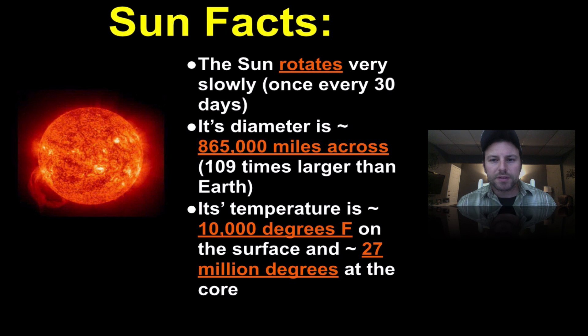A couple of facts we should know about the sun: one, that it rotates relatively slowly, once every 30 days. It is about 109 times larger than the Earth, and its temperature is 10,000 degrees Fahrenheit on the surface and 27 million degrees at the core. So relatively hot there, and that is where nuclear fusion is taking place.